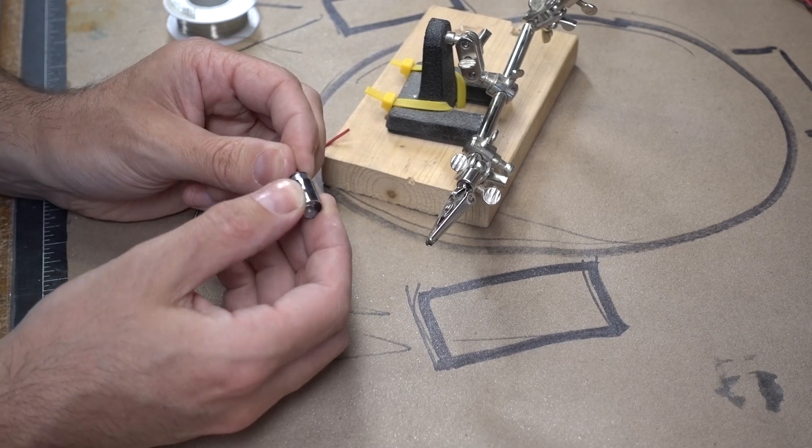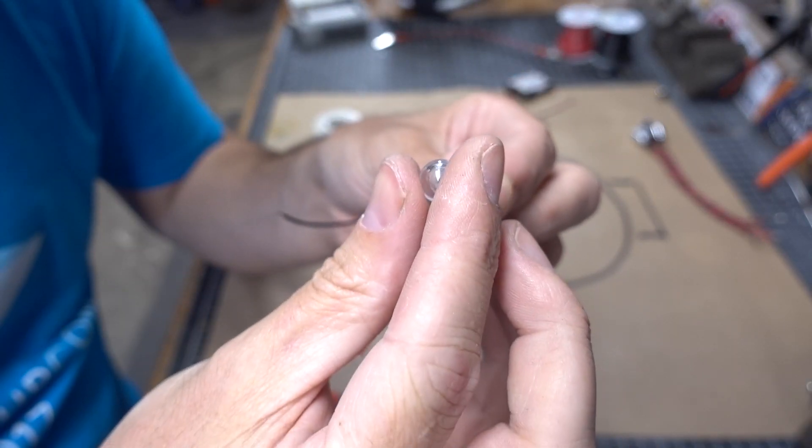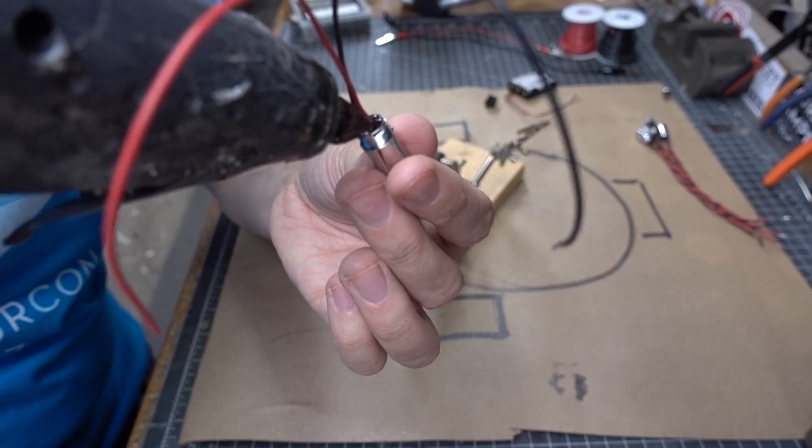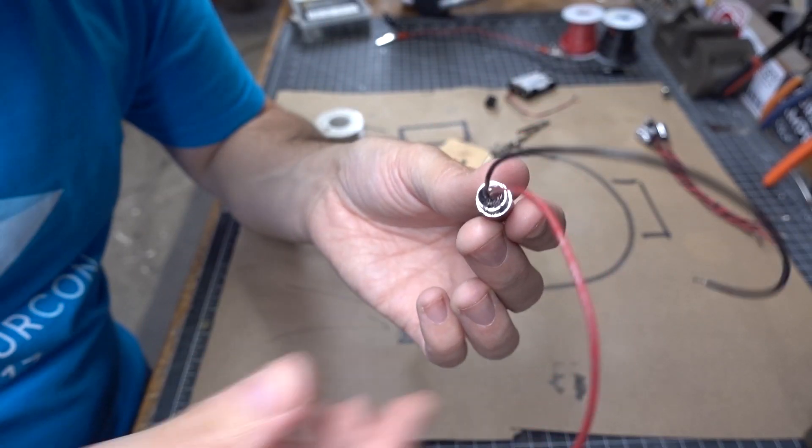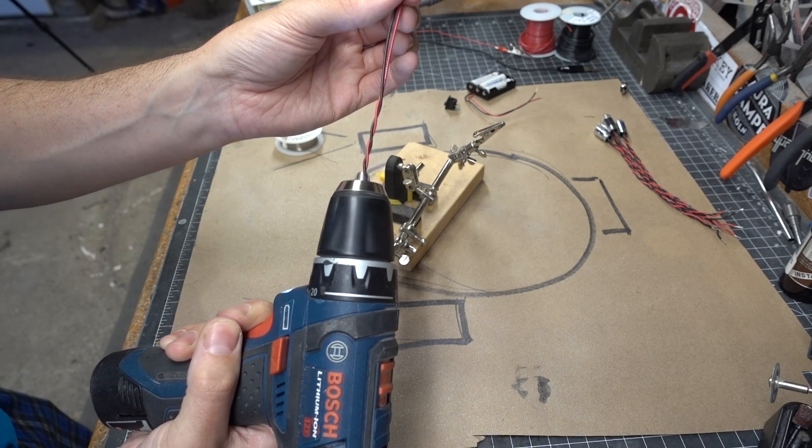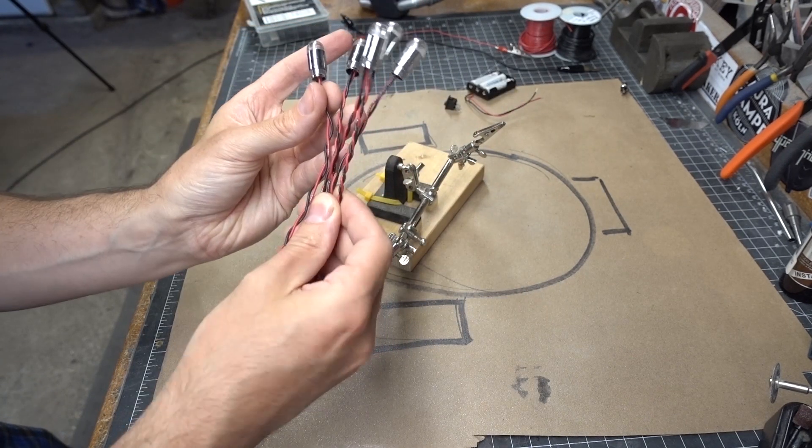Next the wired up LED was secured back into the light housing with a little bit of hot glue, both on the light end and the end where the wires were dangling out. This made sure the wires wouldn't come loose. Then I twisted up the wires using a power drill to keep them nice and tidy. I repeated this process for the remaining three lights.